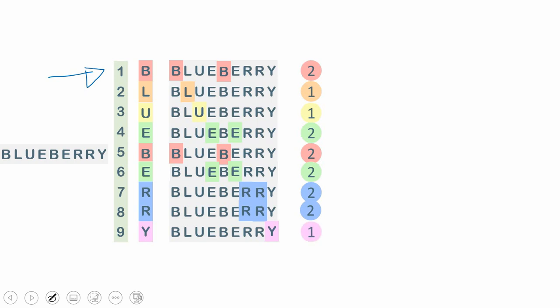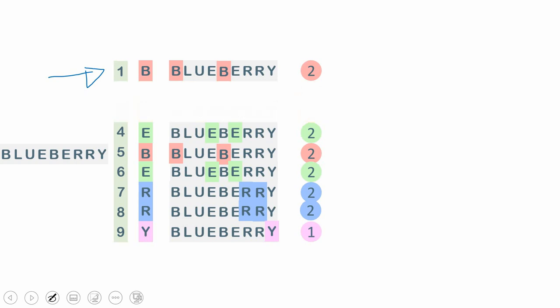Now we have computed the number of occurrences of each character per row. Our expectation is to exclude any character that occurs more or fewer than two times. For example, row two — character L occurs only once, so we exclude it. Row three — character U occurs only once, exclude it. Row nine — character Y occurs only once, exclude it. Any character occurring more than two times would also be excluded. We have now filtered to only characters that occur exactly twice: B, E, and R.